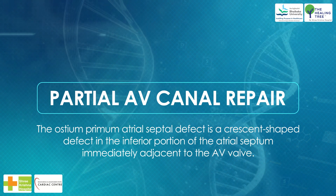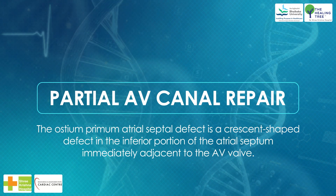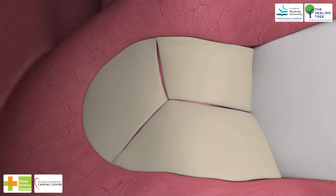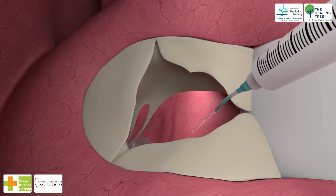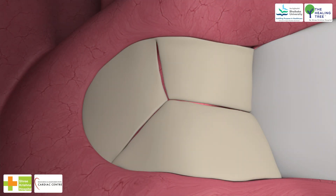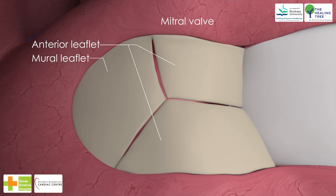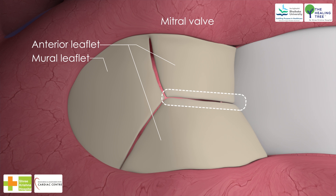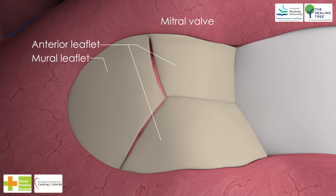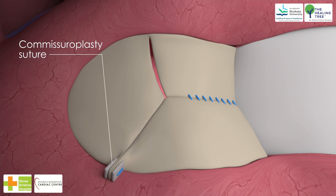Partial AV canal repair: the ostium primum atrial septal defect is a crescent-shaped defect in the inferior portion of the atrial septum, immediately adjacent to the AV valve. Operative steps: (1) a primum atrial septal defect is usually associated with a cleft of the anterior leaflet of the mitral valve; (2) cleft closure should be performed by meticulously accurate apposition of the cleft edges, usually best achieved by simple 6-0 or 7-0 Prolene sutures.